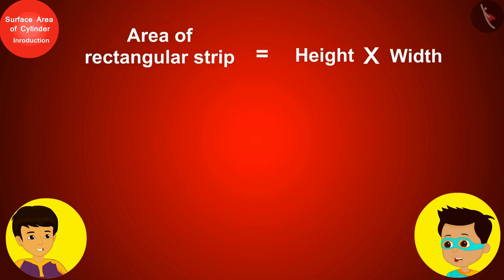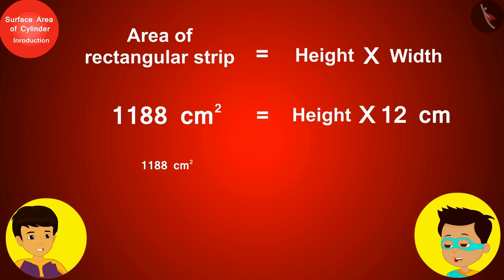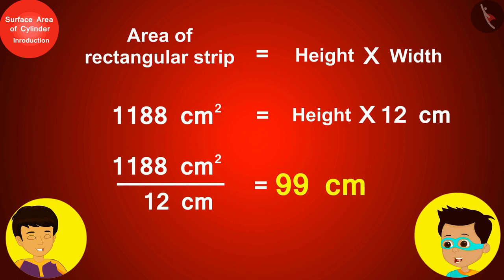The area of the rectangular fabric is 1188 square centimeters. If the width of the cloth is 12 centimeters, then its length will be 1188 ÷ 12, which equals 99 centimeters. So I have to buy 99 centimeters of cloth — that's right, Thomas!